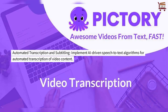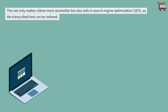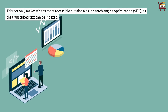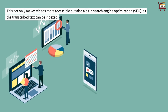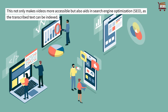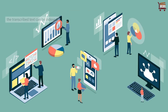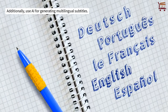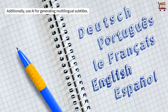Automated Transcription and Subtitling: Implement AI-driven speech-to-text algorithms for automated transcription of video content. This not only makes videos more accessible, but also aids in search engine optimization (SEO), as the transcribed text can be indexed. Additionally, use AI for generating multilingual subtitles.